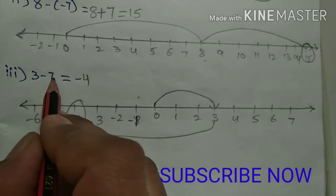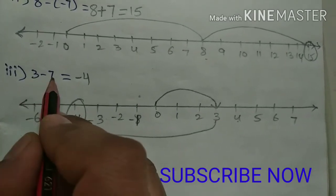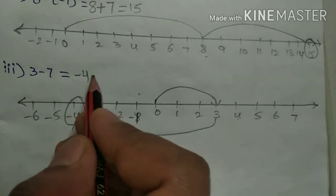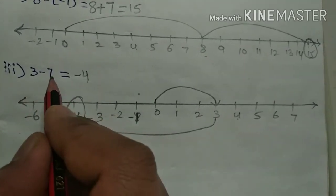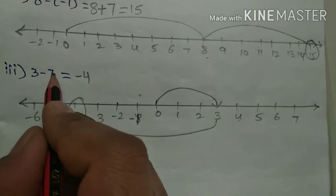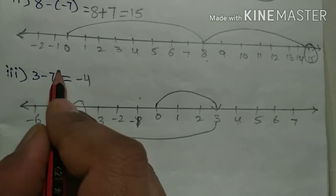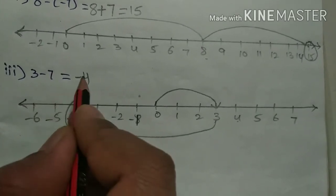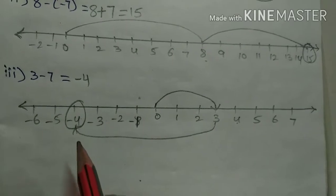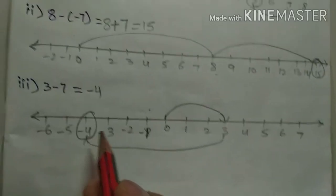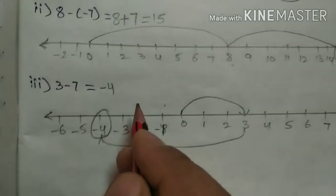Here, as usual, do the subtraction: 7 minus 3 is nothing but 4. So the bigger number's sign we should keep. 7 is the bigger number and it has a negative sign here. So the answer is minus 4. It is clear for you, students.